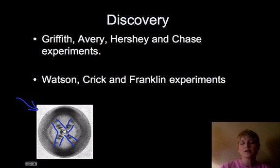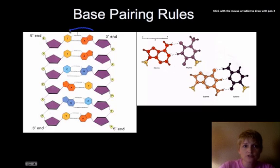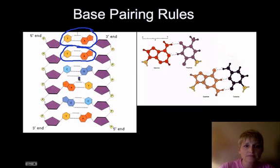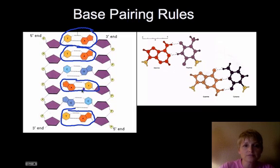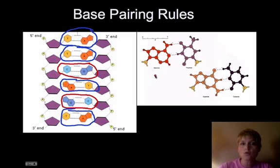This led to figuring out the base pairing rules. Looking at the sugar-phosphate backbone with the base pairs in the middle, you'll notice that T is always paired with A, and C and G are always together. This is a rule: A always pairs with T, and C always pairs with G.